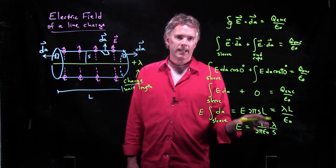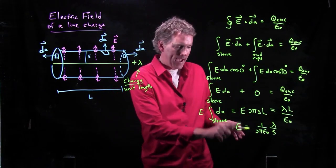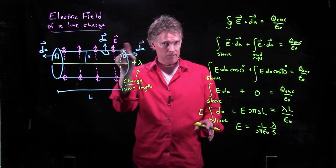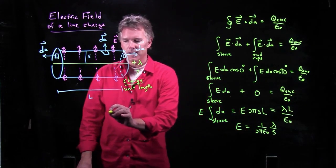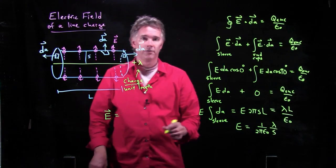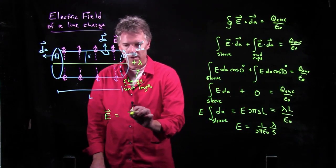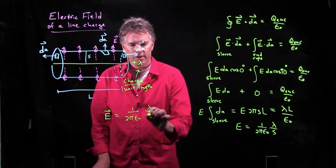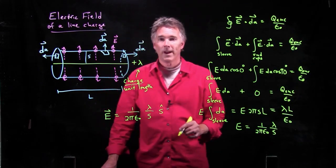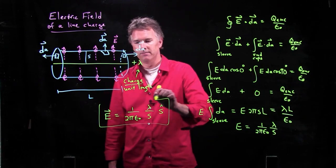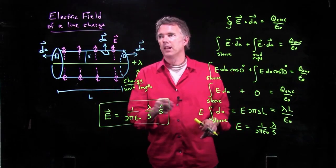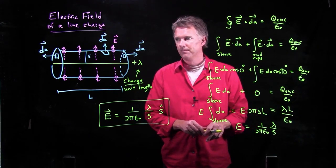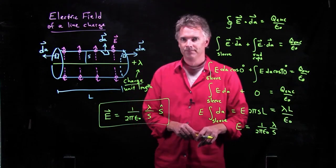Again, Gauss's law gets you a scalar quantity. It gets you a magnitude of E. It doesn't tell you the direction. For the direction, you have to go back to the symmetry of the problem that we started with. And so now we can write down the final result. What is E in terms of a vector field? It is 1 over 2 pi epsilon naught lambda over S, and it's in the radial direction, S hat. This is the electric field of a line charge if its charge density is lambda. Hopefully that's clear. Cheers!